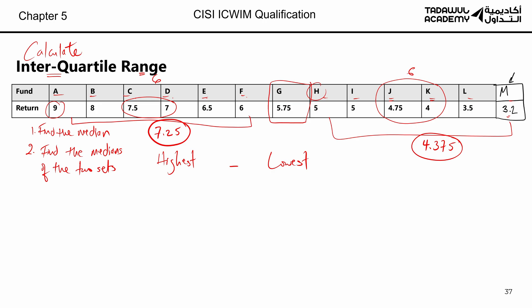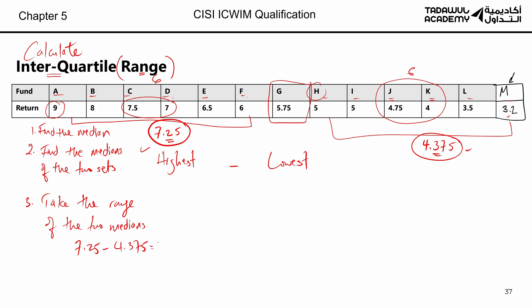Now you have the top median (7.25) and the bottom median (4.375). The third step is to take the range of the two medians. The range is the higher number minus the lower number: 7.25 minus 4.375 equals 2.875. That's the interquartile range — the range between the quartiles, meaning the range between those two medians.